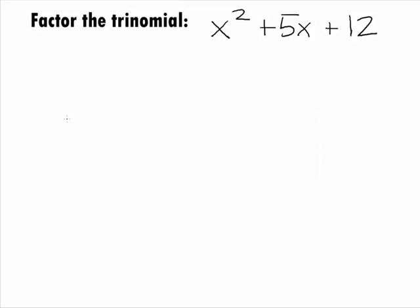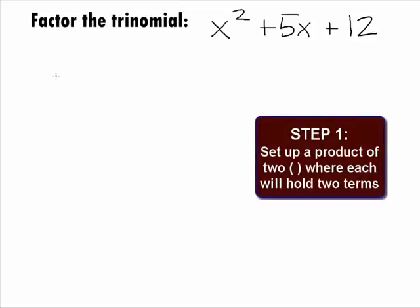Basically, we will do this by reversing the FOIL method. In Step 1 of factoring this trinomial, we want to set it up as a product of 2 binomials.